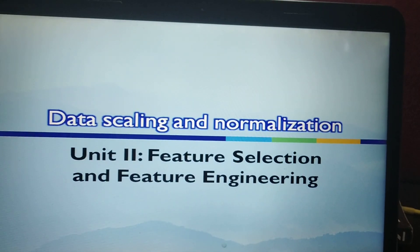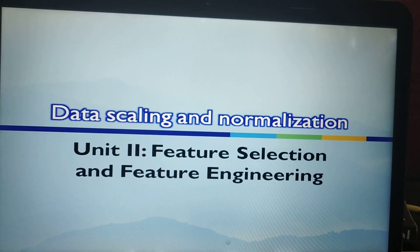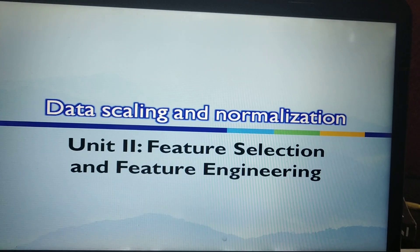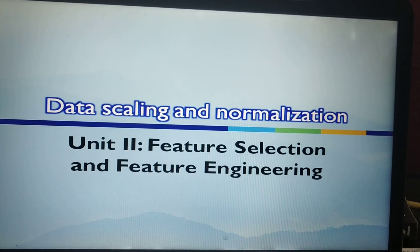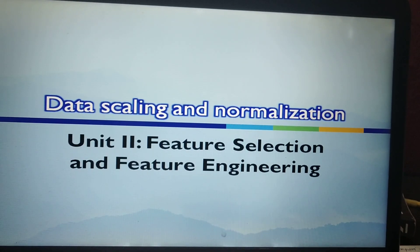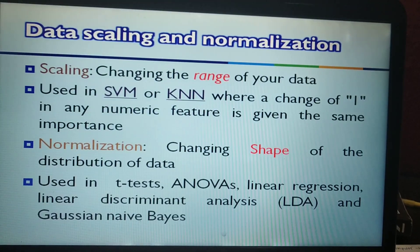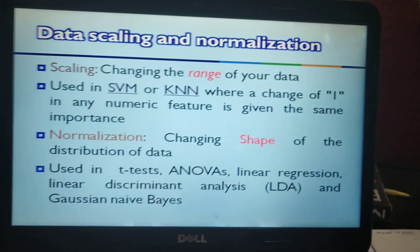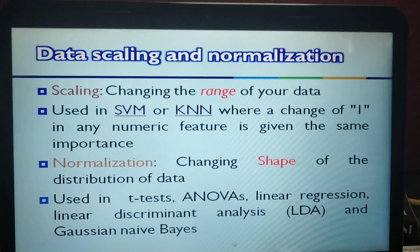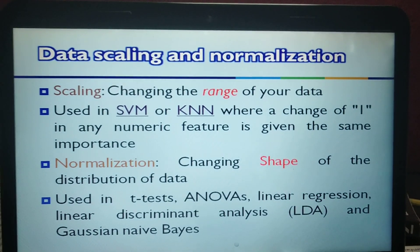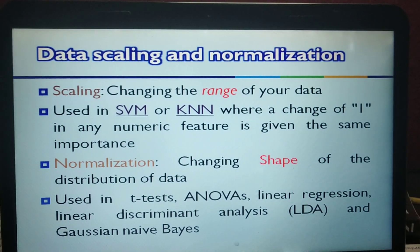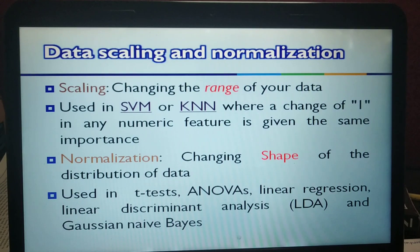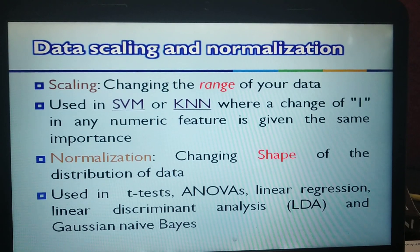Data scaling and normalization is considered a pre-processing step in machine learning algorithms. Before giving the data to the algorithm, we apply this step — that's why it is called pre-processing. Let us start with data scaling and normalization.